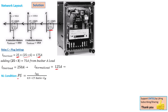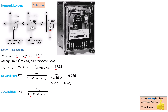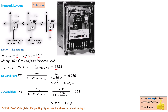Calculating the plug setting under normal conditions with 90% pickup current gives a resulting plug setting of 0.926, which is 92.6%. Because we do not have a 92.6% plug setting, we choose 100%. But our main target is the plug setting under overload conditions — we do not want relay C to trip during an overload. Using a pickup current of 1.1 for the overload condition results in a value of 151%. Since there is no 151% selection, and we cannot move backward, we take the next higher value in 25% steps — giving us a plug setting selection of 175%.